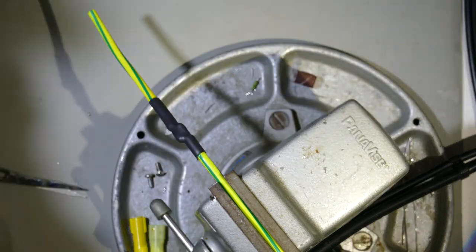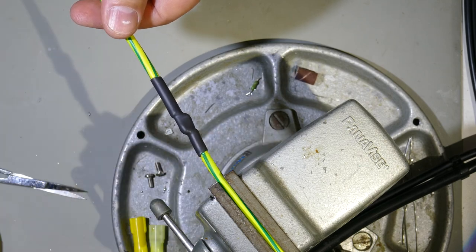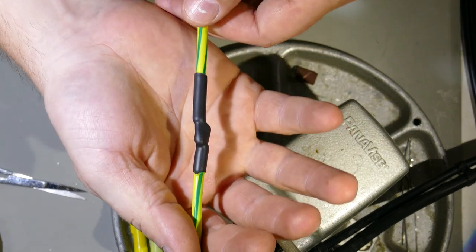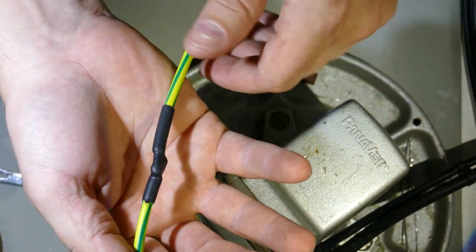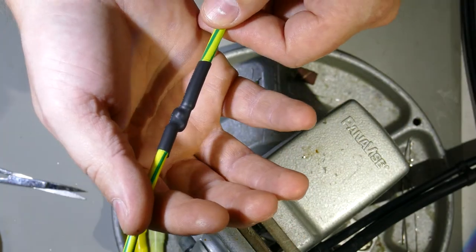So here we go at 300 degrees. You can see this air station takes no time at all. There you have it. Two wires bonded together. Got glue coming out at both sides. It's a good tight bond. No cold solder joints there.